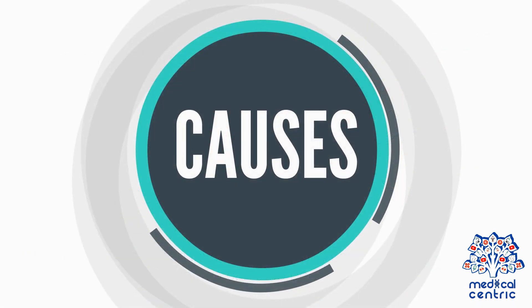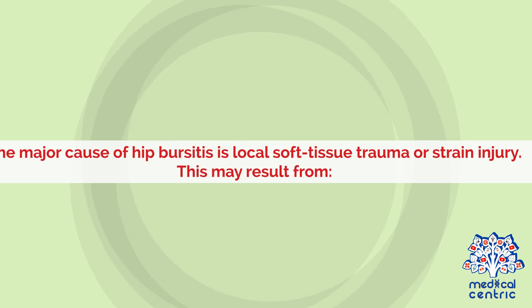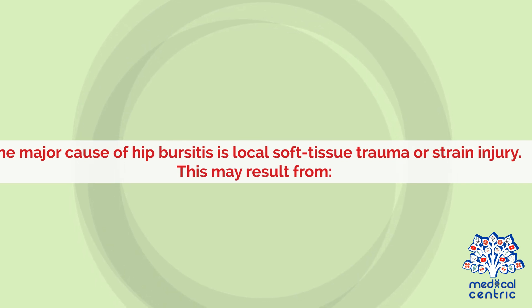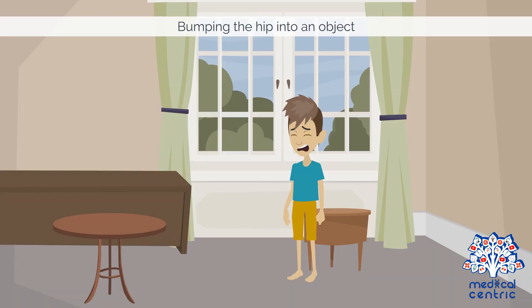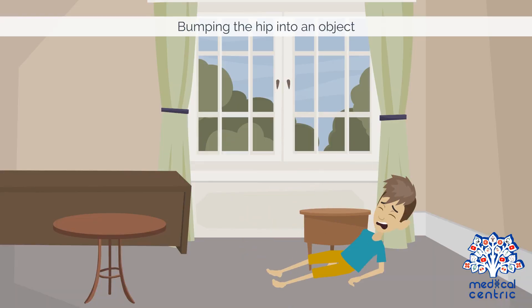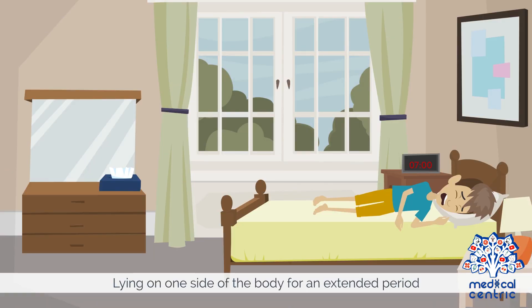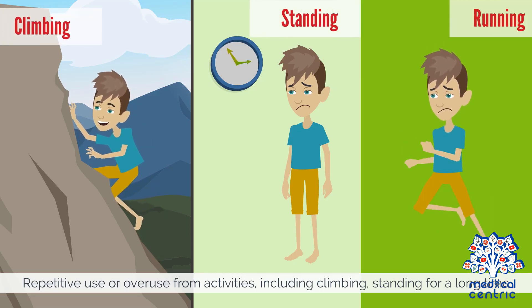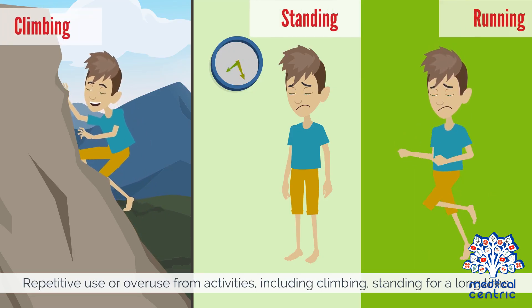Causes. The major cause of hip bursitis is local soft tissue trauma or strain injury. This may result from bumping the hip into an object, lying on one side of the body for an extended period, or repetitive use or overuse from activities including climbing, standing for a long time, or running.